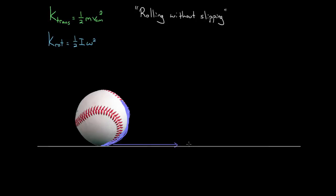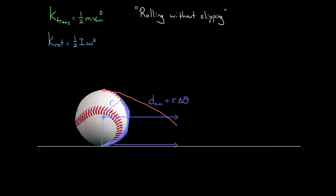Why do we care that it travels an arc length forward? Because that means the center of mass of this baseball has traveled that arc length forward — that's the distance the center of mass has moved. That's equal to the arc length, which equals r times delta theta, how much angle this thing has rotated through. Note this is not true for every point on the baseball — a point at the top takes a complicated curved path through space. But the center of mass just goes in a straight line, so its distance traveled equals the arc length the baseball rotated through.